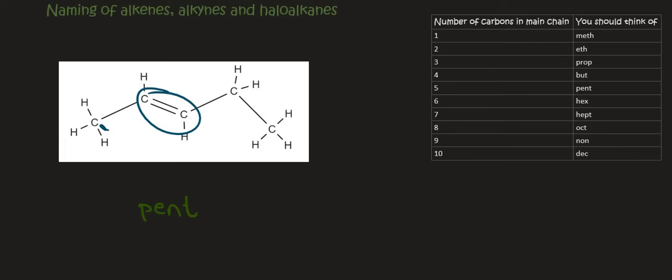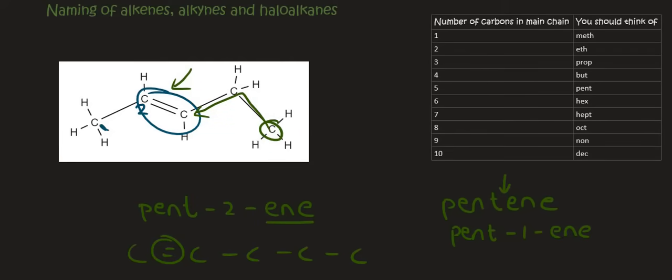We name it from the side that is closest to the double bond, so that'll be this side. That'll be carbon number one, carbon number two. So on carbon number two, we have a double bond, and so we end it with ene. If I had just said pentene, then what scientists around the world automatically assume is that it's on carbon number one. So it would be the same as pent-1-ene. Remember that it is incorrect if you name it from the right-hand side, because then the double bond would be on carbon number three.